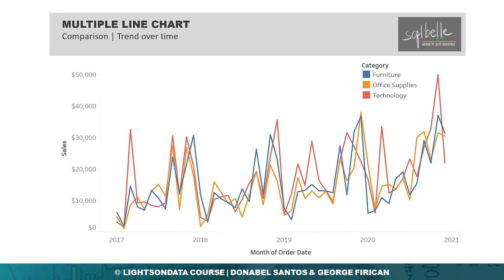Having one line per category allows us to see how each category fares against other categories, but we can already see some of the downfalls of this approach. Having multiple lines can become confusing and may not make it easy for us to compare the categories against each other. What this does allow us to see is the similarity of the trends for all categories in general.